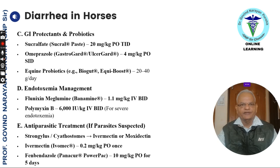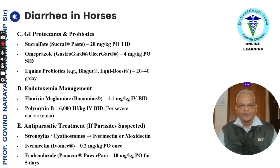One can use protectants: sucralfate 20 mg per kg, omeprazole, and equine probiotics. For endotoxin management, use flunixin and polymyxin B. For anti-parasite control — strongyles or cyathostomes — use ivermectin 0.2 mg per kg orally once, or fenbendazole 10 mg per kg orally for 5 days. For horses, medicines need to be administered through the stomach tube.